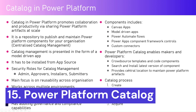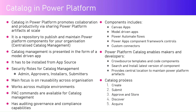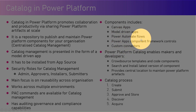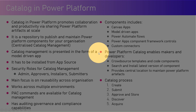The catalog in Power Platform promotes collaboration and productivity by acting as a centralized repository storing various artifacts, including canvas app components, model-driven apps, Power Automate flows, Power Apps component framework controls, and custom connectors. The catalog itself is a model-driven app that can be installed from AppSource.